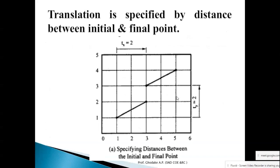Here is one example of how translation is performed. This is an original line given in the x-y coordinate system. For example, this is point P1 and this is point P2. So x1, y1 = 1, 1 and x2, y2: x2 is 3 and y2 is 2.